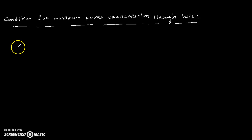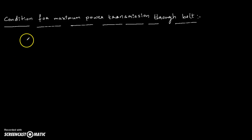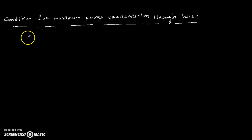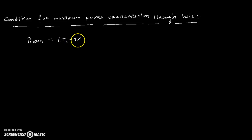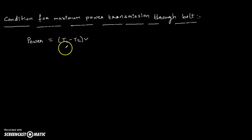Hello everyone, welcome to RN Tutorials on Engineering Mechanics. In this video, I am going to explain how to derive an equation related to the condition for maximum power transmission through the belt. Whenever the belt transmits maximum power, we need to find the relation in terms of tensions. For that, we first take the help of the power formula.